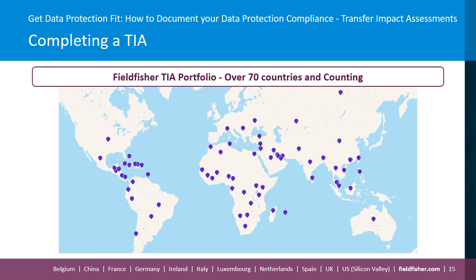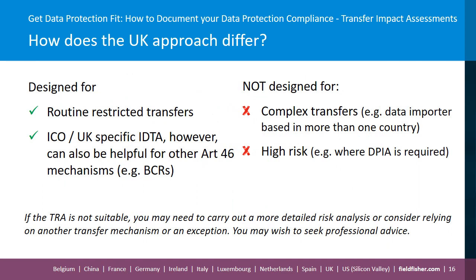Now I will hand over to Matt to discuss the UK approach. This episode would not be complete without considering the ICO's transfer risk assessment guidance and the accompanying transfer risk assessment tool. Before looking more closely at the UK tool, it's important to highlight a couple of points. The tool is only intended to apply to routine restricted transfers. It should not be used for complex transfers — i.e. those where data importers are in more than one country — and it should not be used for high-risk processing activities, for example activities where a DPIA would be required. The tool is also only sufficient for the purposes of UK GDPR. So if you think EU GDPR is applicable, at least in part, to your transfers, it makes sense to follow the EDPB guidelines and use a TIA approach.